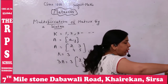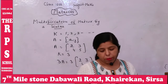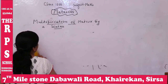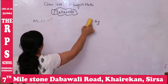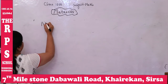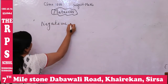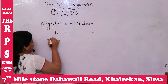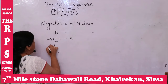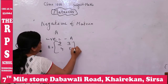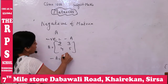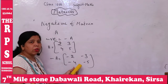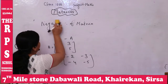Next is negative of a matrix. If A = [2, 3; 4, 5], then the negative of matrix A, written as −A, means all elements get a negative sign. So negative of matrix simply negates all elements.